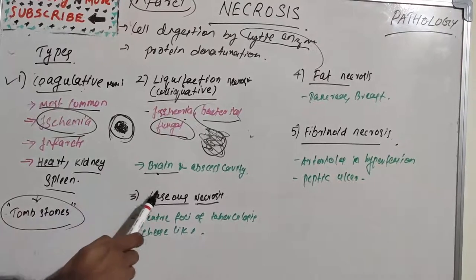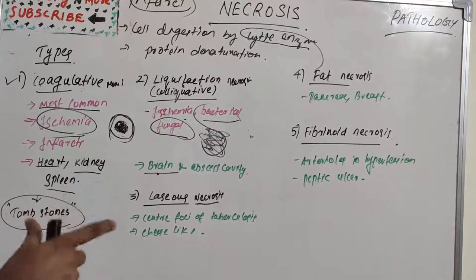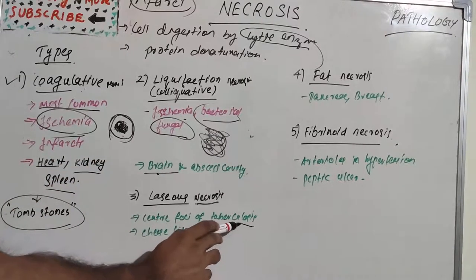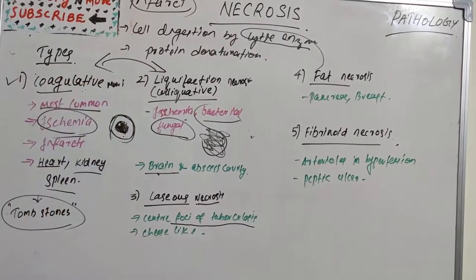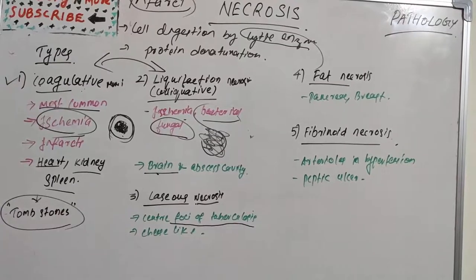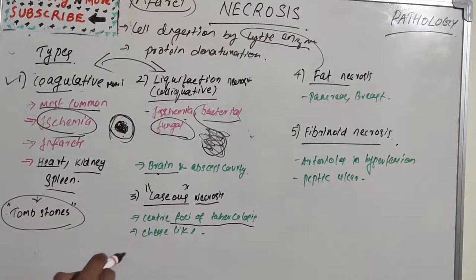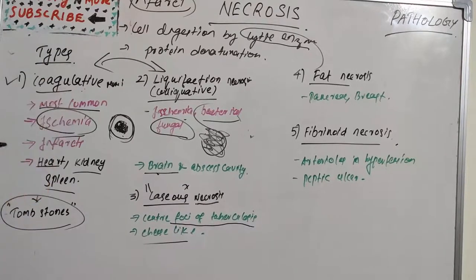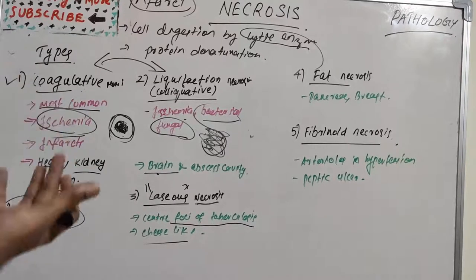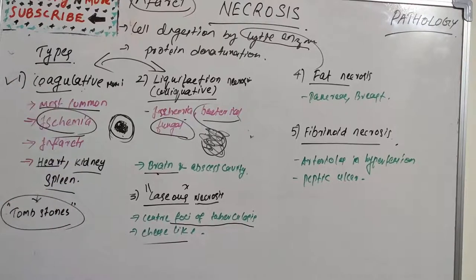The third type is caseous necrosis, found in the center of foci of tubercular infection. It combines features of both coagulative and liquefactive necrosis. The name 'caseous' means cheese-like — this peculiar necrosis has a yellow-white appearance resembling cheese. In gross morphology, the foci resemble dry cheese and are very soft, granular, with a lotion color. Microscopically, there are eosinophilic structureless necrotic foci with epithelioid cells present.